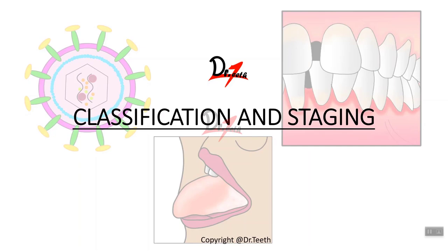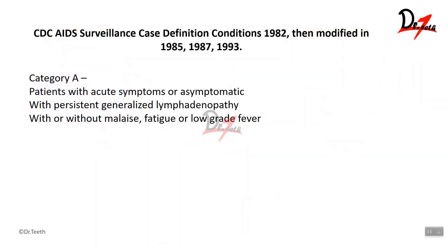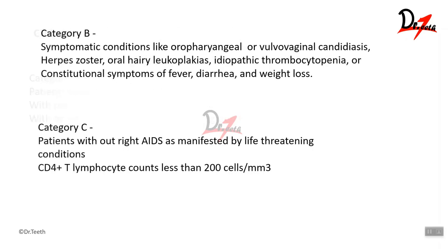Now let's classify and stage the disease. The CDC — Center for Disease Control — conducted an AIDS surveillance case definition in 1982, later modified, giving three major categories. Category A patients have acute or asymptomatic presentations — either no symptoms or acute symptoms like generalized lymphadenopathy, low-grade fever, fatigue, or malaise.